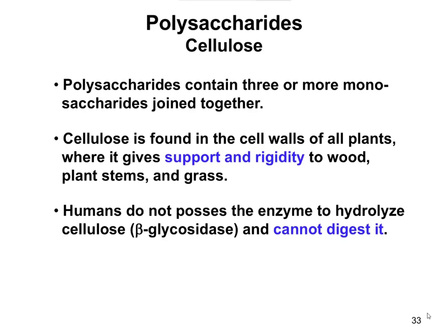A couple that you need to know. One is going to be cellulose. Cellulose is going to be a primary polysaccharide in a lot of plants — grass, for example. The reason grass stands upright is because it has this rigid structure to it, which is primarily due to cellulose. Same thing with wood and plant stems and things of that nature.